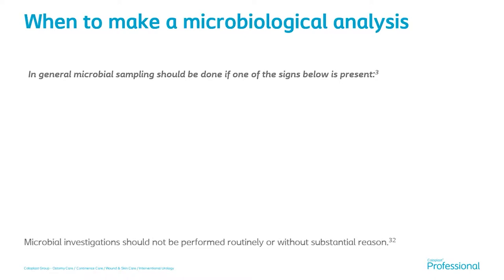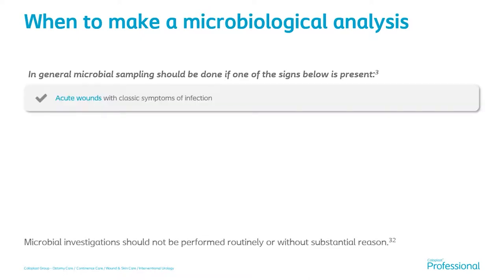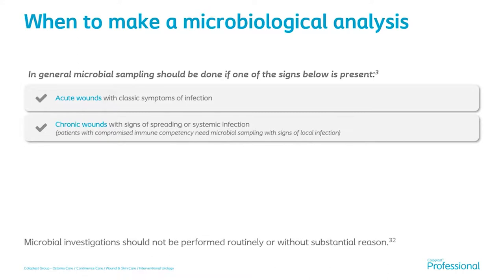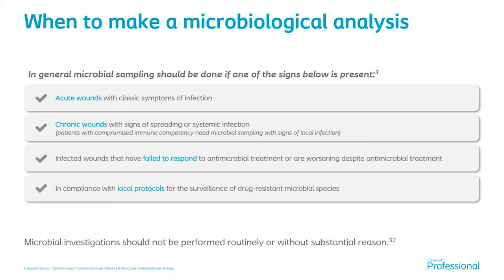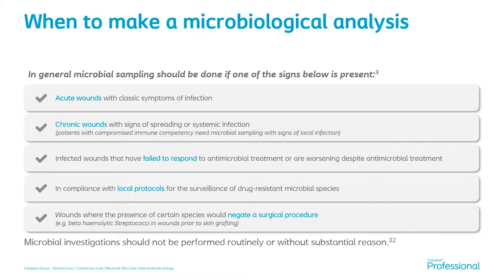When do we need to consider other ways of identifying wound infection, such as microbial sampling — wound swabs? We might want to swab acute wounds with classic symptoms of infection, or chronic wounds with signs of spreading or systemic infection, infected wounds that have failed to respond to antimicrobial treatment or are getting worse despite treatment. Compliance with local protocols and procedures is key — you should look at your own trust's policy on wound swabbing. Suspected specific bacteria or advice from a specialist would also be reasons for swabbing.